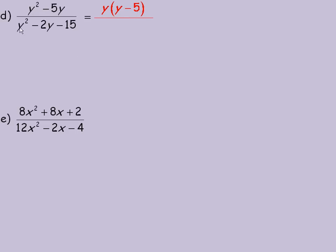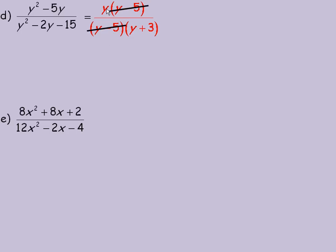In the denominator, in order to factor this trinomial into two binomials, I would look for two numbers that add to negative 2 and multiply to negative 15. And of course those numbers are negative 5 and positive 3. So this denominator will factor into y minus 5 and y plus 3. Then the common y minus 5 will divide out and we're left with just y over y plus 3.